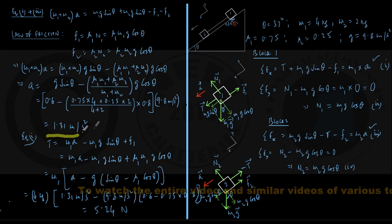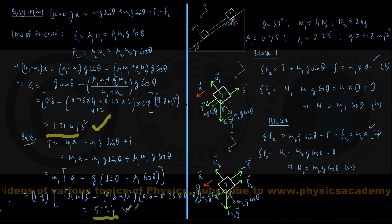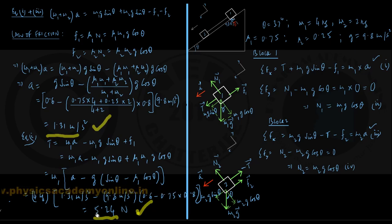acceleration of the two block system, 1.3 m per second square down the incline and the tension in the string is 5.24 N. And these are the answers of this question.